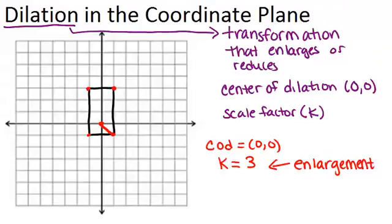So make this new point 3 times as far away. So if that's 1, then this is 2, and this is 3. So this is where the new point will be. We do the same thing over here, 1, 2, 3. Here's our new point.